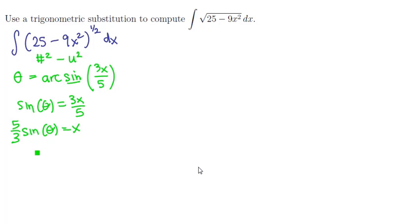Now we've switched the roles of x and y so we'll differentiate. We'll have 5 thirds times the cosine of theta is equal to the derivative of x with respect to theta. Multiply through by a d theta we get 5 thirds cosine of theta d theta is equal to dx and this is easy to replace.